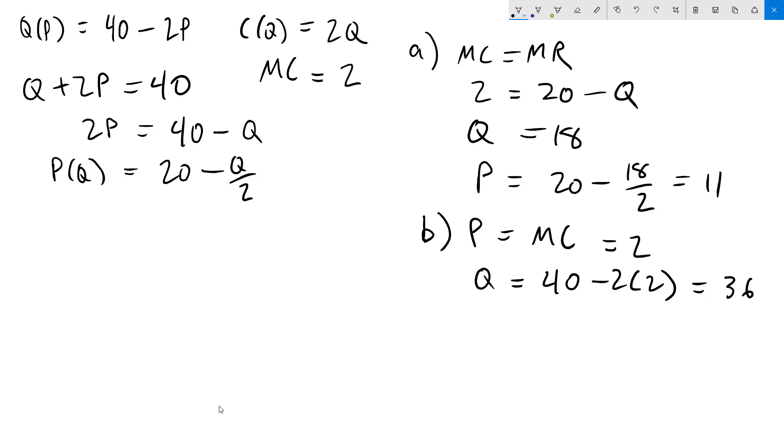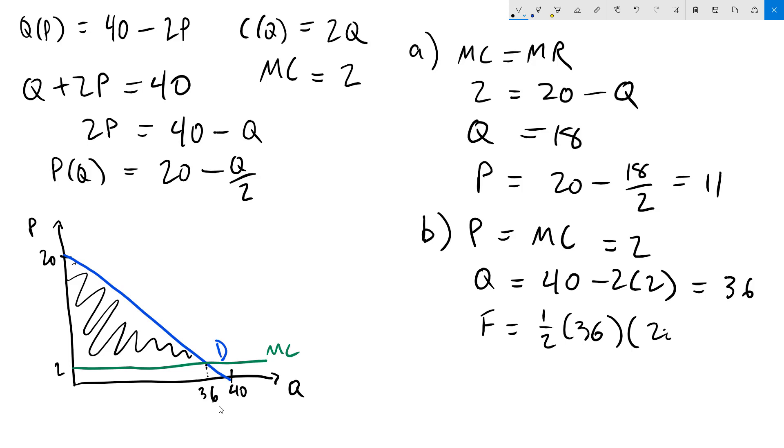The last thing we need to figure out for two-part pricing is what is the fixed fee. The easiest way to do that is to draw a graph. We need to graph our demand function, which has a price intercept of 20 and a quantity intercept of 40. And then we need our marginal cost, which is 2. The quantity is 36. The consumer surplus that we would have with a price of 2 will be the area of this whole triangle here. And to extract all the possible surplus we're going to set the fixed fee equal to the area of that triangle. So to get the area we have one-half base of 36 and a height of 20 minus 2. That comes out to 324.